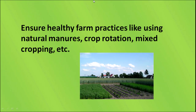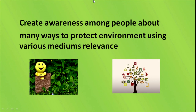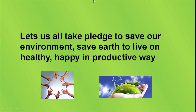The government should also ensure healthy farm practices like using natural manures, crop rotation, mixed cropping, etc.; motivate people to grow trees; conserve wildlife by maintaining forest reserves; create awareness among people about the many ways to protect the environment using various mediums; and maintain green environments in towns. Let us all take a pledge to save the environment, to save the earth, and to live a happy, healthy, and productive life. Thank you.